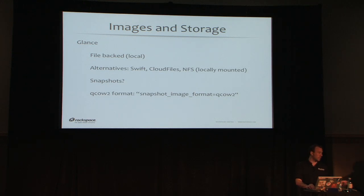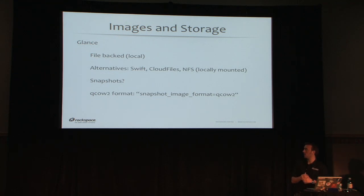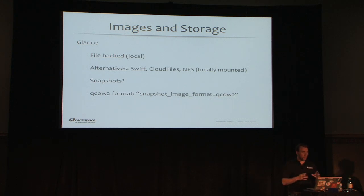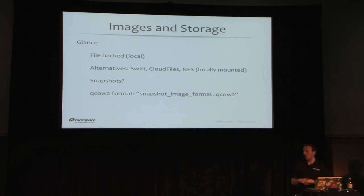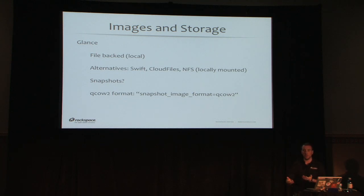One of the best benefits of QCOW2 is that when you spin up an instance, the base image gets copied to the compute node and creates a QCOW2 file used as local disk. As soon as you have an instance on every compute node, the base image is already cached on each one. Each subsequent instance then takes about a second to start. If you have a very large raw image, you have to copy all that data every time, so the more base images you have, the less useful your local cache becomes.